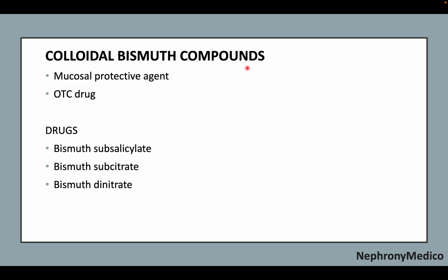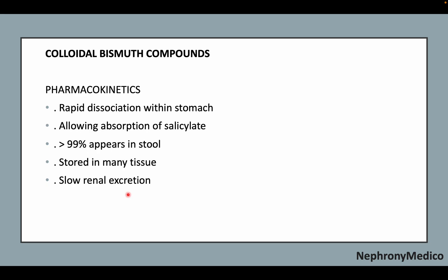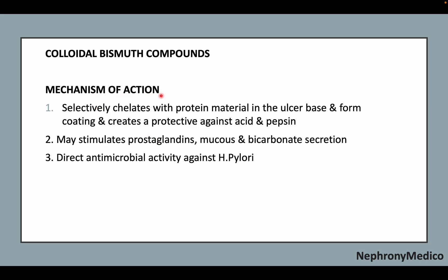Colloidal bismuth compounds are OTC mucosal protective agents and include bismuth subsalicylate, bismuth subcitrate, and bismuth dinitrate. There is rapid dissociation within the stomach, with more than 99% appearing in the stool and slow renal excretion.